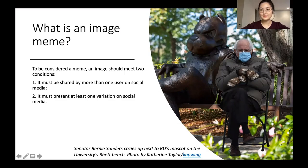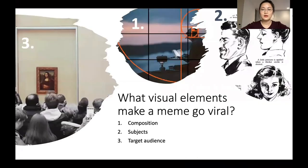Let's take the Bernie Sanders meme as an example. It is widely shared online, and in this picture he is sitting beside the mascot of Boston University — and this is a variation. So to understand what visual elements make a meme go viral, we developed a codebook for qualitative analysis.